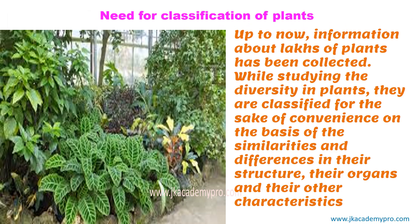Need for classification of plants. Classification means grouping items together. Plants were also grouped. Now why did they do that? As scientists started studying about the plants and their various functions, various sizes, and various shapes, they collected a lot of information — lakhs of information was collected about different types of plants. While studying, they found that the plants were of different types; that is, they found diversity in the plants.